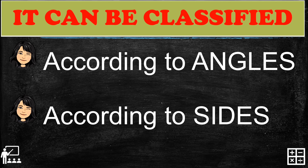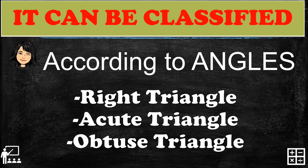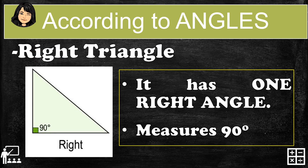The triangles classified according to angles are the right triangle, acute triangle, and obtuse triangle. According to sides, these are the equilateral triangle, isosceles triangle, and scalene triangle.